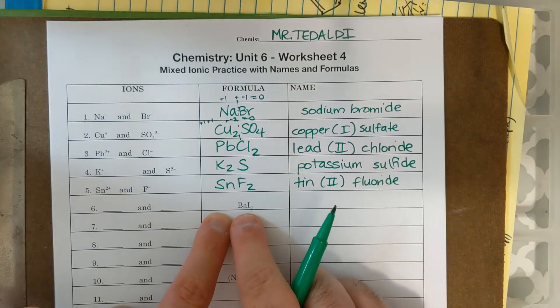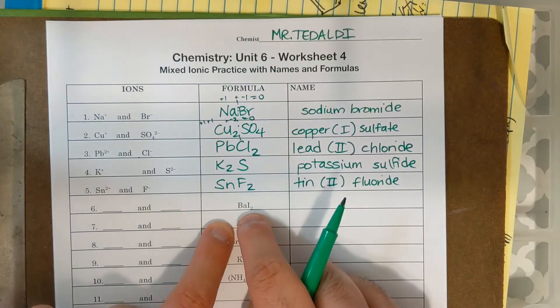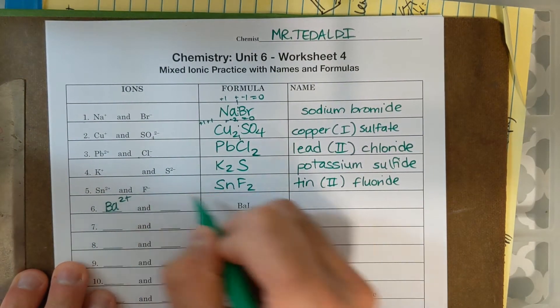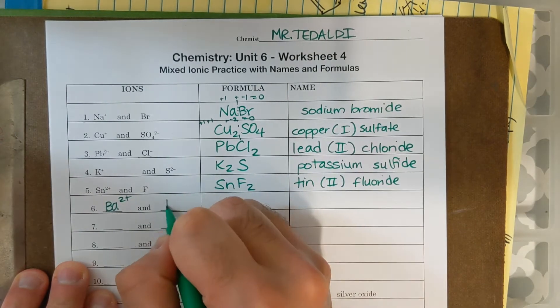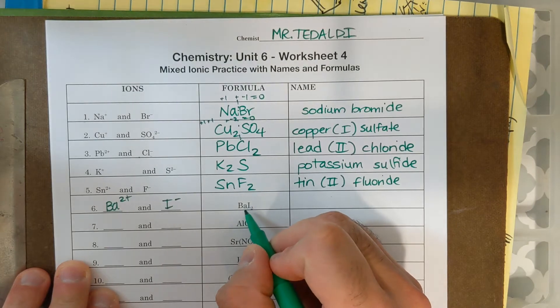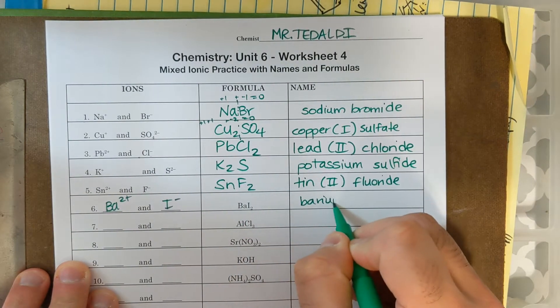Now next one, working a bit backwards, we have BA and I, BA I two. BA is barium, its symbol in charge is BA with a two plus. I, symbol in charge is I minus. This is not containing, this is not a compound that contains a transition metal, so this is just going to be barium iodide.